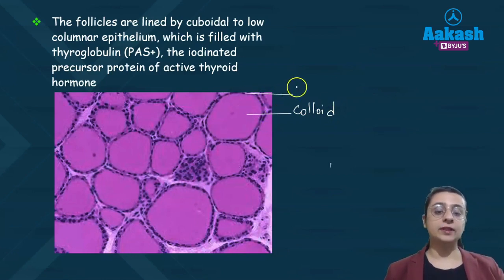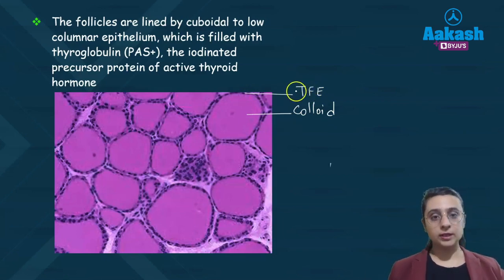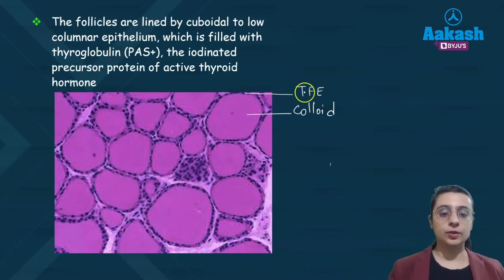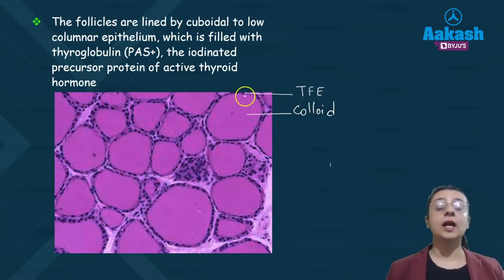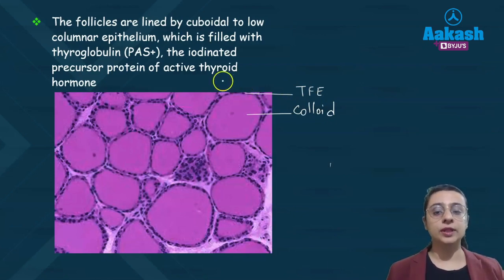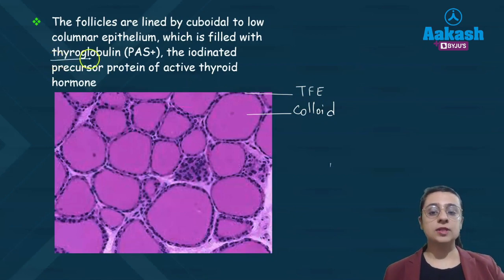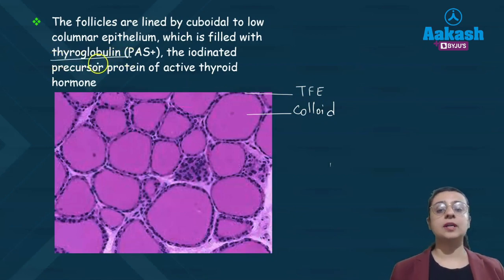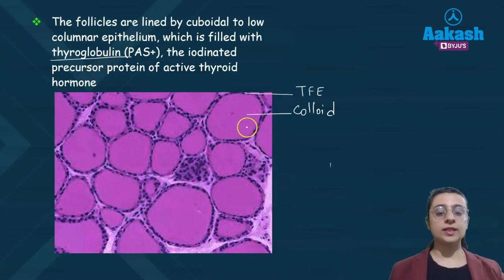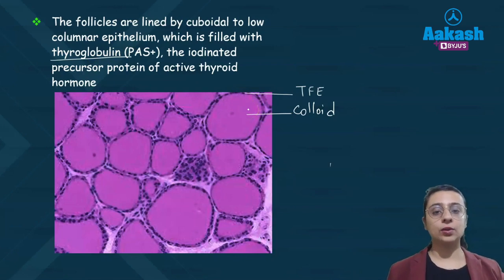These follicles are lined with thyroid follicular epithelium, which is cuboidal to low columnar in the inactive state, whereas in the active state it is tall columnar. This epithelial lining contains thyroglobulin — a PAS-positive substance which acts as a precursor protein for the synthesis of active thyroid hormones.